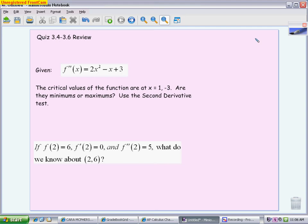So the first one, you are given a second derivative, and then in the written part, it says that there are critical values of the function at x equals 1 and x equals negative 3, and we want to determine if they're minimums or maximums. So here's a case where you can't do the first derivative test. The first derivative test was when you set up intervals using the critical values, and you tested them in the first derivative and checked to see if it went from increasing to decreasing or decreasing to increasing. We can't do that here.